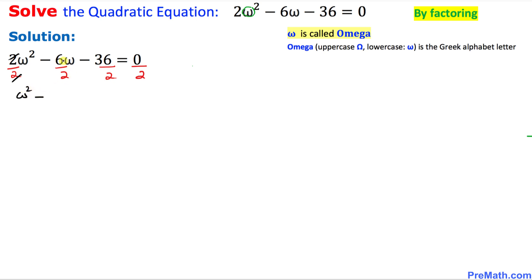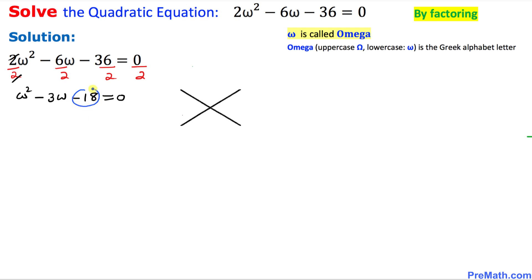Now we can see that our leading coefficient is simply 1. In our next step, I want you to put down this -18, the constant part, on the top, and at the same time, we're going to write down this middle number, -3, at the bottom in this factor.